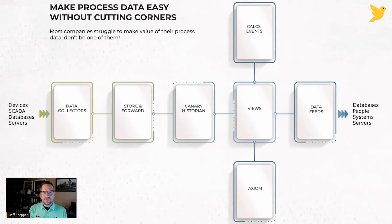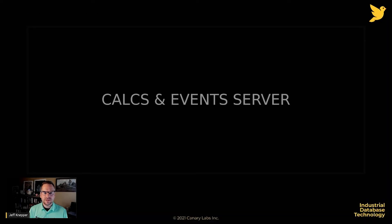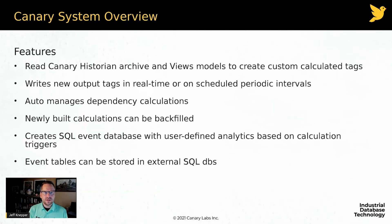What about calcs and events? That's the other piece of contextualization. I have tags being logged into the historian — how can I add more context around those tags? For instance, I might have three pumps, each with a flow. How do I add context on what my average flow is for those three pumps? That's where our Calcs and Events server comes in.